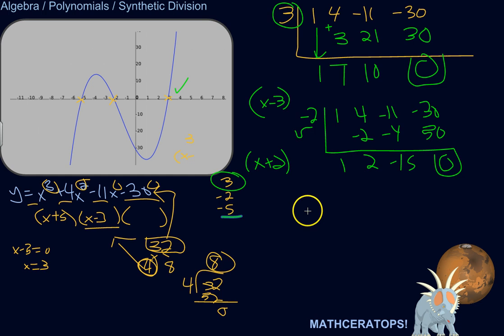Just, I'll show you an example of where you'd get a remainder. 7. We're going to check 7. 1, 4, negative 11, and negative 30 are coefficients. Bring down the 1. 1 times 7 is 7. Add 11. 11 times 7 is 77. Minus 11 is 66.